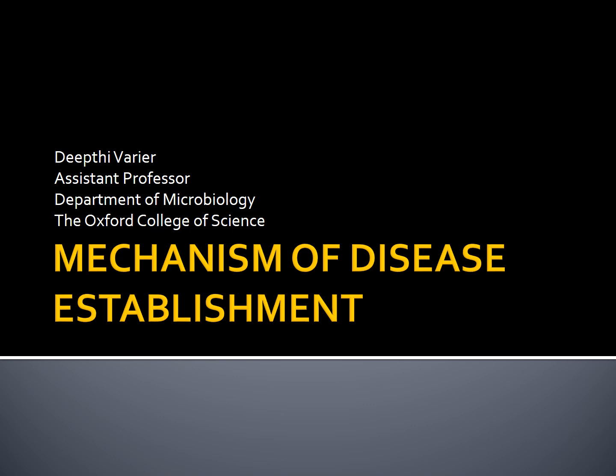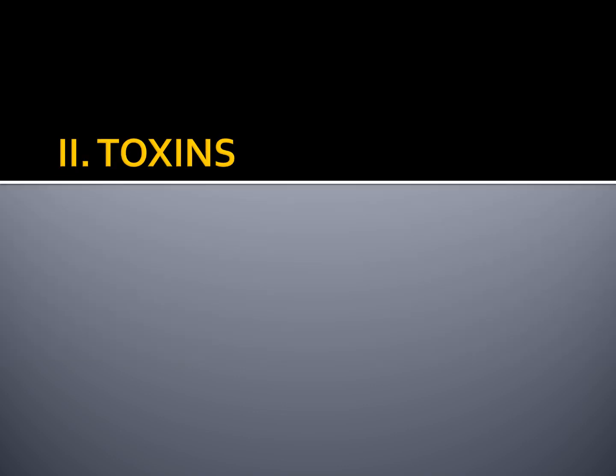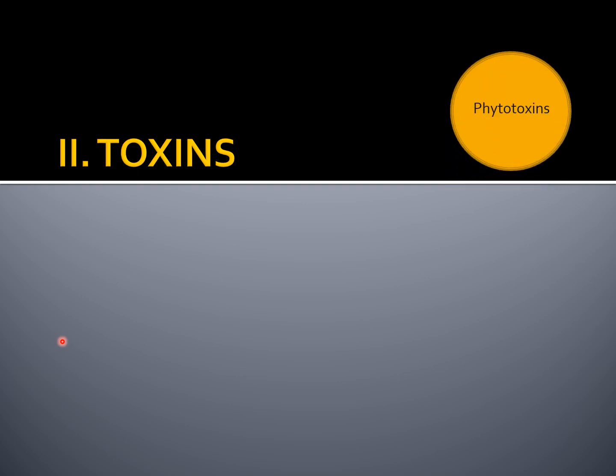Hello students. In the previous class we studied the mechanisms of disease establishment by phytopathogens. We finished with one of the chemical weapons of a pathogen — the enzymes — and today we will be talking about the second chemical weapon: the toxins produced by a pathogen. These phytotoxins act on the host protoplast, affecting the permeability of the cell membrane, or they inhibit or activate certain enzymes necessary for metabolic reactions in the host.